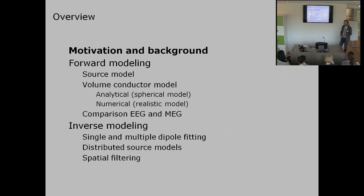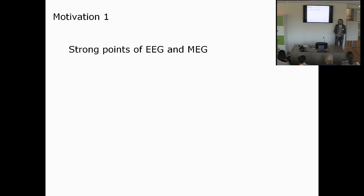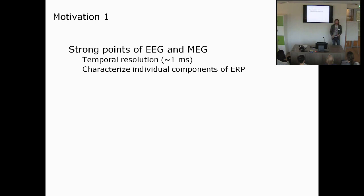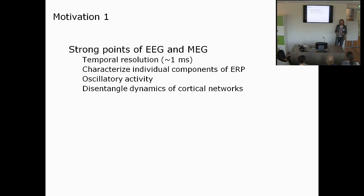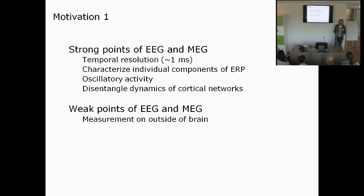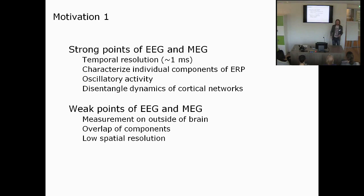Looking at EEG and MEG, the strong points are that they have very high temporal resolution, allowing us to track brain activity really fast. With this high temporal resolution we can characterize individual components of evoked potentials, look at oscillatory activity, and disentangle the dynamics of cortical networks. The weak point is that it's a measurement on the outside of the brain, so we have overlap of components and relatively low spatial resolution, especially compared with hemodynamic methods such as fMRI.